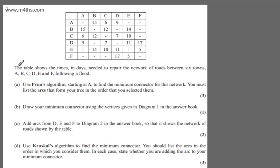This is question number three. We're told the table shows the times, in days, needed to repair the network of roads between six towns A, B, C, D, E and F, following a flood. In part A, for three marks, we're asked to use Prim's algorithm, starting at A, to find the minimum connector for this network. We must list the arcs that form our tree in the order that we've selected them.